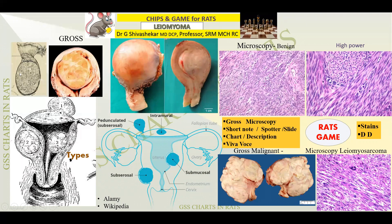When it migrates it is called a wandering leiomyoma. It can derive blood supply from the ovarian artery, in which case it is called a parasitic leiomyoma. Now, what is the importance of this particular chart?